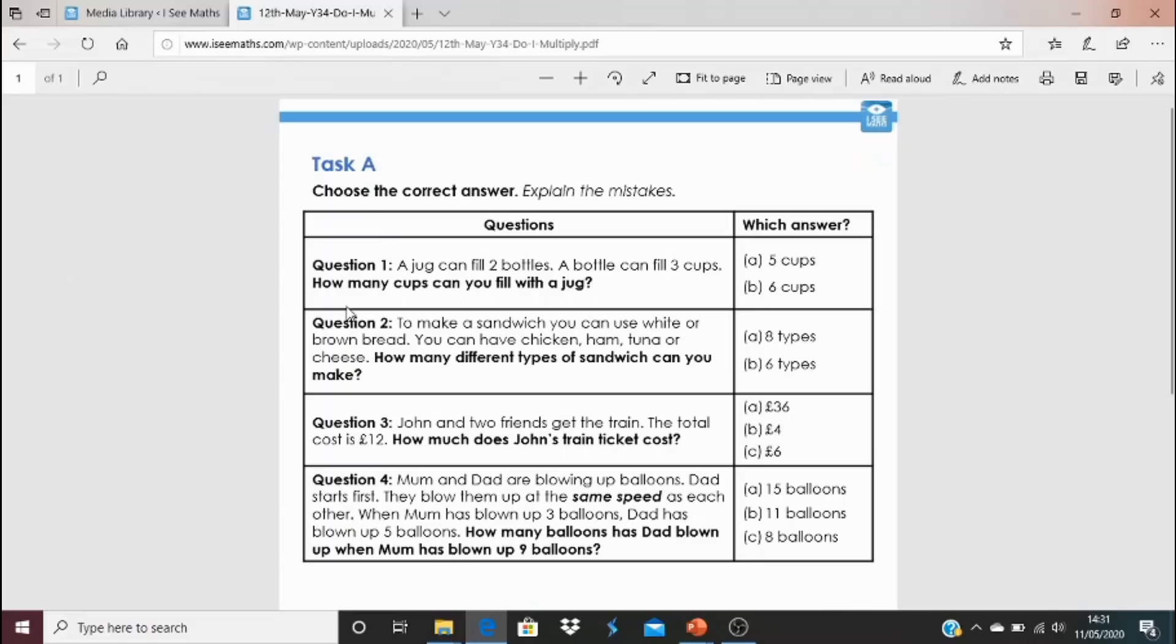So for task A, I've got these four questions, questions one to four. And I've actually given you the answer. So one of them for each question is the correct answer. Which one? You might even be able to explain what the mistake has been made for the one that isn't the correct answer. So why might someone think it is the correct answer when actually it isn't? So choose which of the answer is correct. And also you might be able to explain the mistakes.